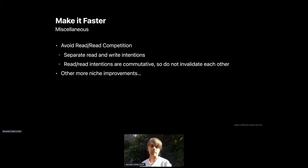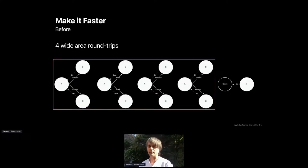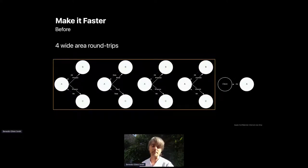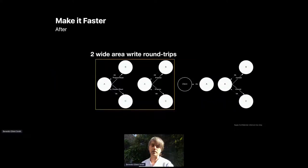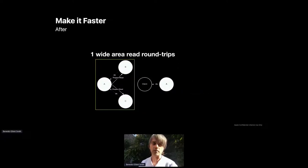This work encompasses some other performance improvements. We prevent competition between commutative operations — specifically reads don't need to invalidate other reads; they can happen concurrently. And there are a bunch of other very specific and technical improvements to recovery. In summary: before this work we were at four wide-area round trips. We're now down to two wide-area round trips in the case of writes, and one wide-area round trip in the case of reads. The performance of these protocols in a global network with multiple regions is pretty much decided by the number of phases, so this is a significant improvement for a fully geo-distributed database.